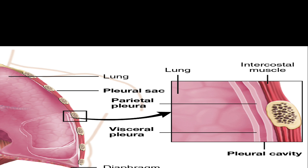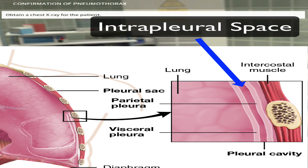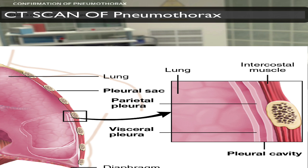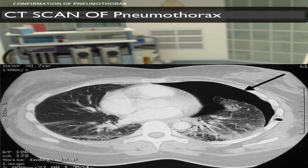On the screen now, this is just the regional anatomy, and you can see the intrapleural space, as well as the visceral pleura and the parietal pleura.